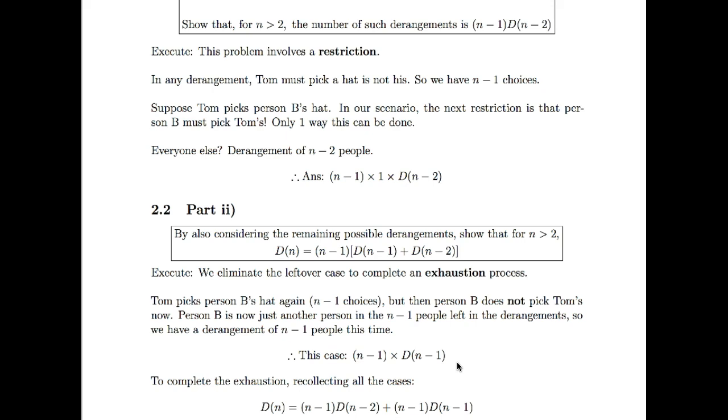Because person B is now not picking up Tom's hat, he is really just, or she is, just another person in all of the remaining n minus one people altogether. He is no longer separate with Tom, in that they pick up each other's hat, but rather, he or she is now just another person in the lot. So we're going to have n minus one people, and among them, there are going to be D(n-1) possible derangements instead. And that's going to give us this formula. And lastly, if you remember how exhaustion works, once we've figured out all the cases, we add them back together, and there is our answer, which is exactly what we wanted to, because all we have to do here is just factorize. Nice and easy.